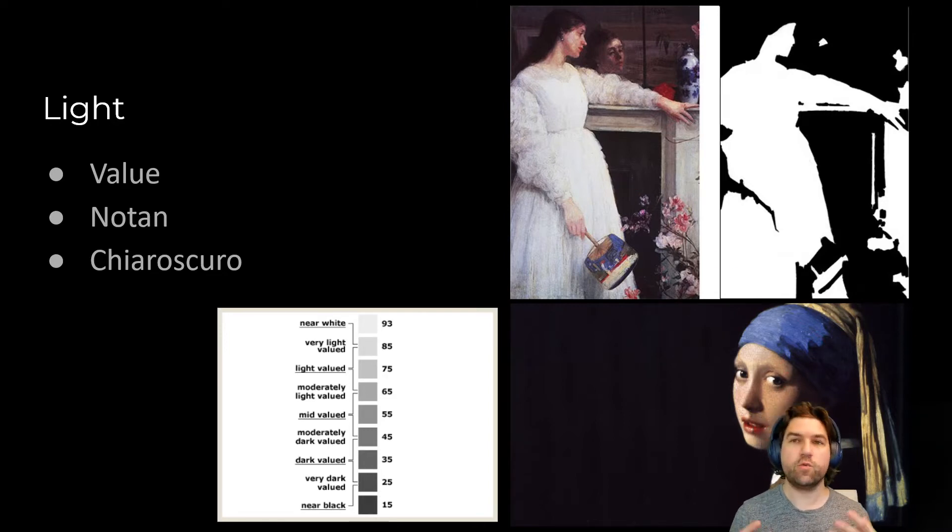And then the third property that's really important is chiaroscuro. This is sort of a painting technique that became very popular, but we can think about it from our lighting standpoint of where are the edges? Where are the edges of the shadow? Whereas our value gives us the sense of how bright or dark something is, our notan helps us create silhouettes to knock objects out, our chiaroscuro tells us what something is shaped like.